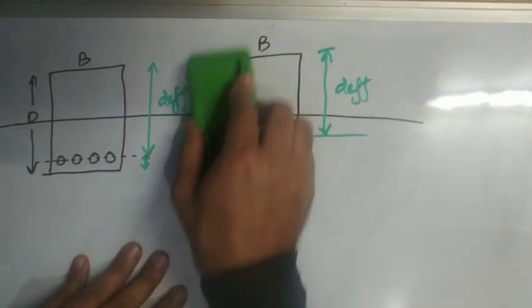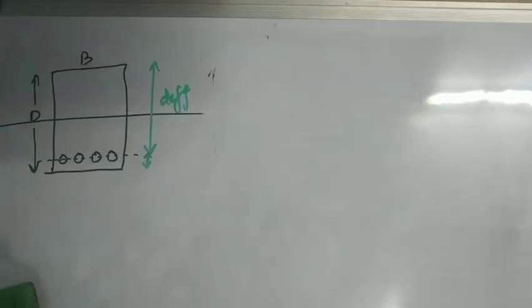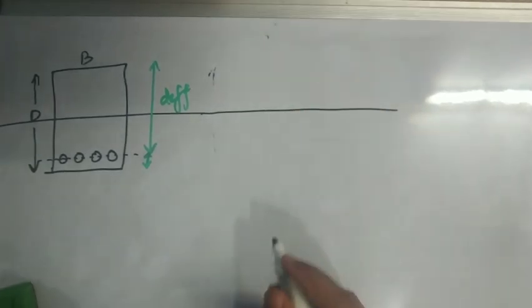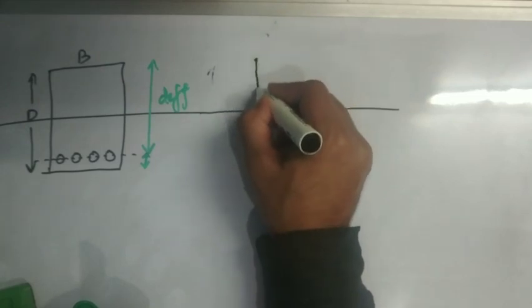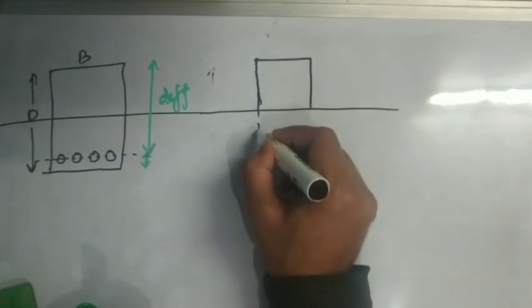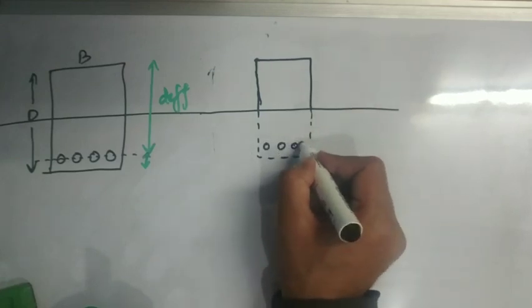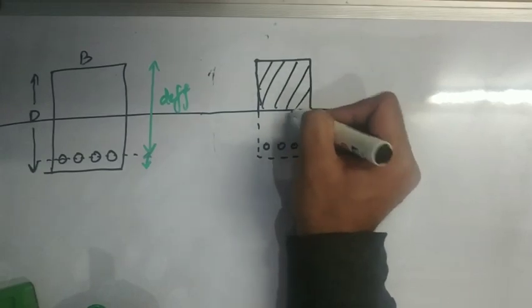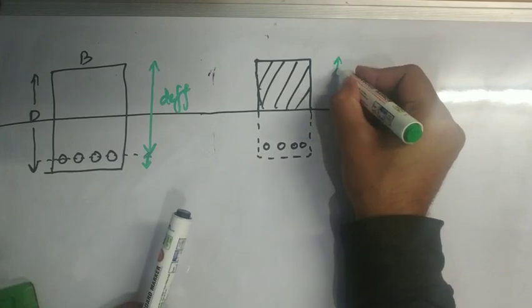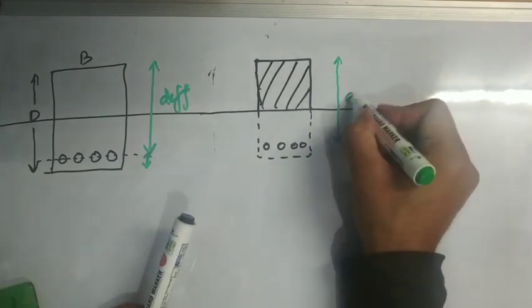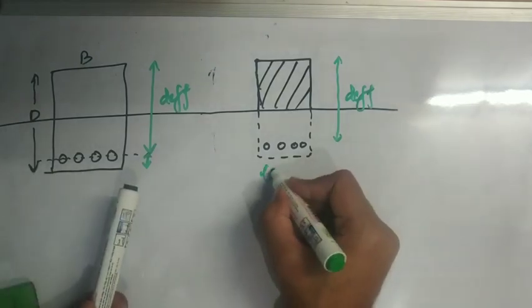Now here is one more topic to be discussed. If we are neglecting the concrete on tension side, then our beam cross section becomes like this. We are considering only this compression portion. So in this case, we will make use of only effective depth, not overall depth. This section is called as cracked section.